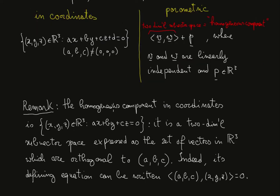Remark: the homogeneous component in coordinates, in the coordinate expression, is simply the same set except that the defining equation will not have the constant term. It will just have the summands involving the variables. So it is the set of triples in R³ x, y, z satisfying the unique equation ax + by + cz equals zero. This is a two-dimensional subvector space expressed as a set of vectors in R³.